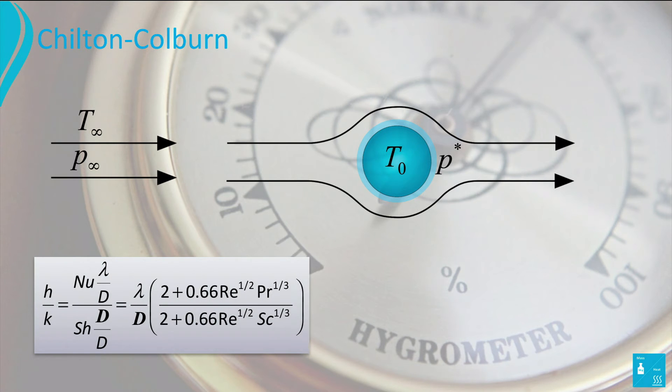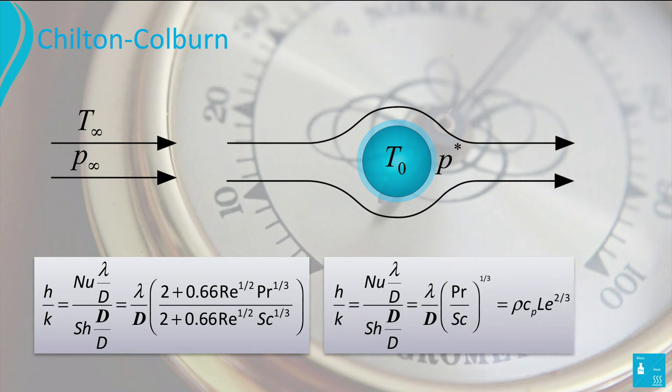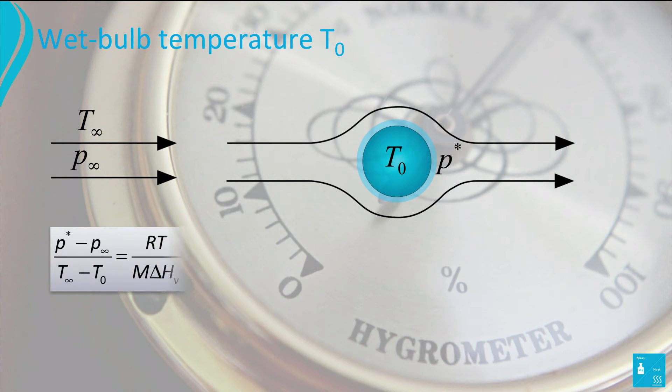If the Reynolds number is not too small, in this equation we obtain, thanks to Chilton and Colburn, an expression for the ratio of the heat transfer coefficient and the mass transfer coefficient in terms of the density, the heat capacity, and the Lewis number.